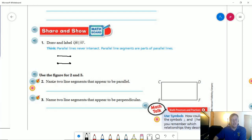I'm not going to take the time to label name two line segments that appear to be parallel. There are two sets of lines that could be parallel to each other. So CB and DF are parallel to each other and then CD and BF are also parallel to each other.